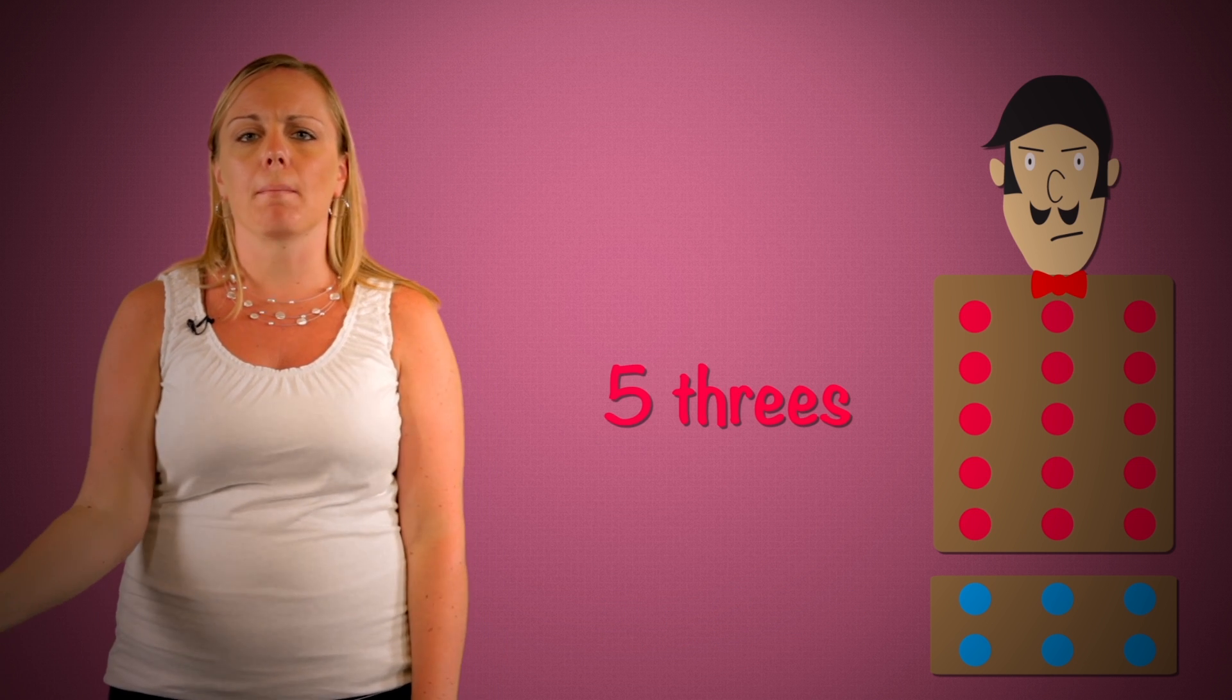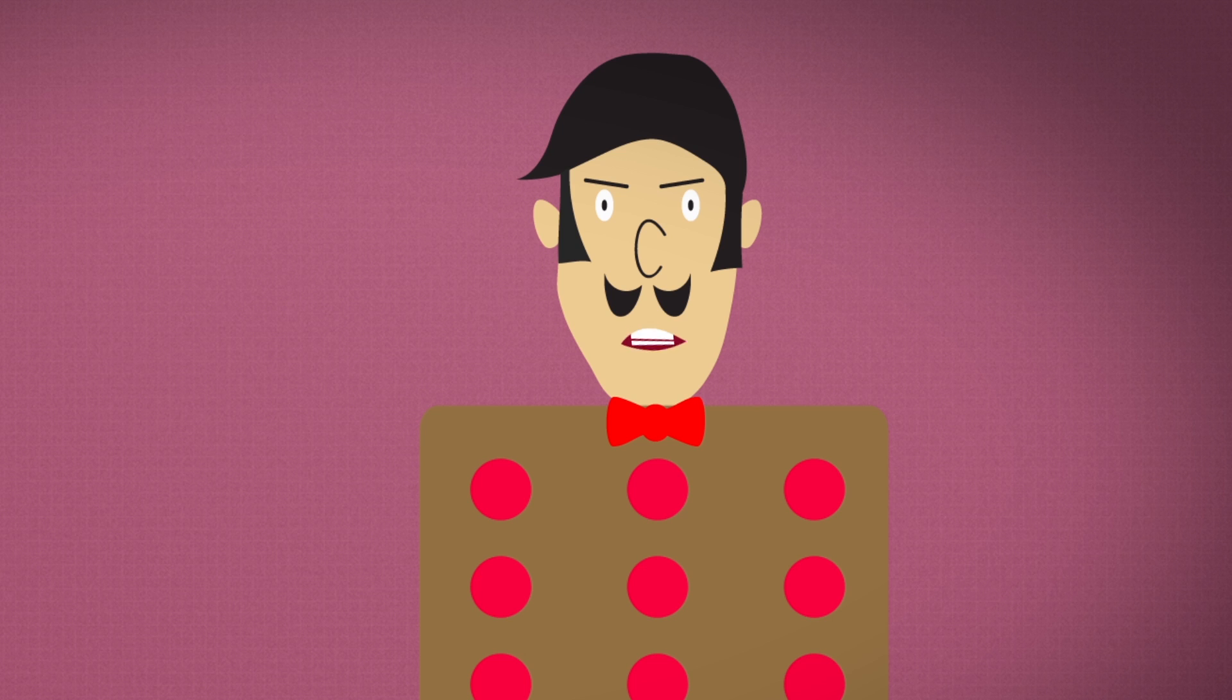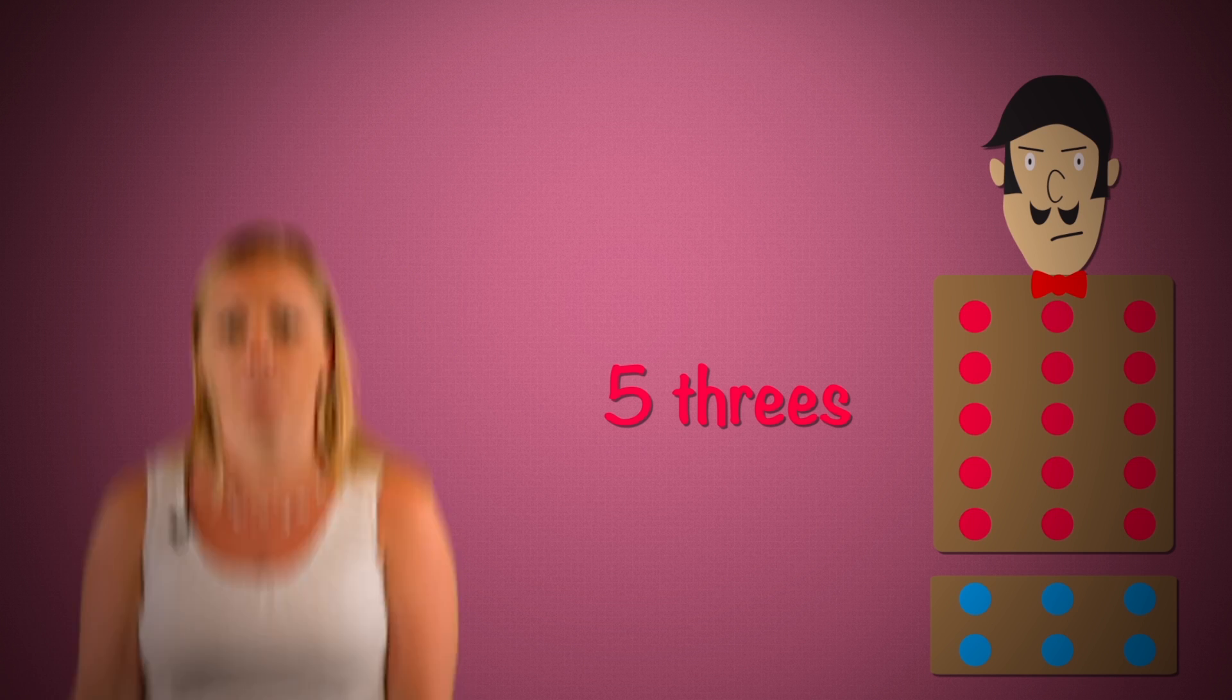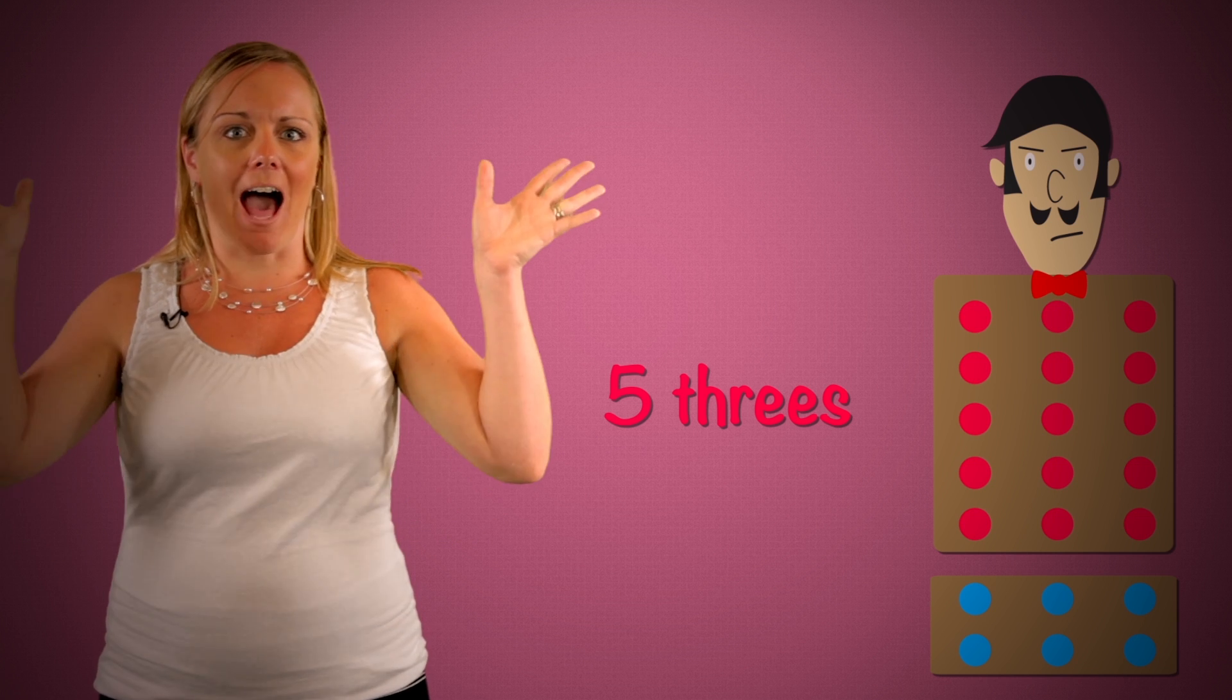Five rows of threes gives us five threes. And down here in the bottom blue half... You mean my legs. How many threes do we have? Aha! Two threes!